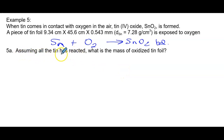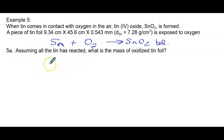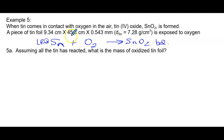It says assuming all the tin was reacted, what is the mass of the oxidized tin? This is my oxidized tin foil. Whichever reactant is used up first is my limiting reactant, and the other is my excess reactant. Every problem in chemistry must begin with the limiting reactant — the least amount of stuff you would produce.